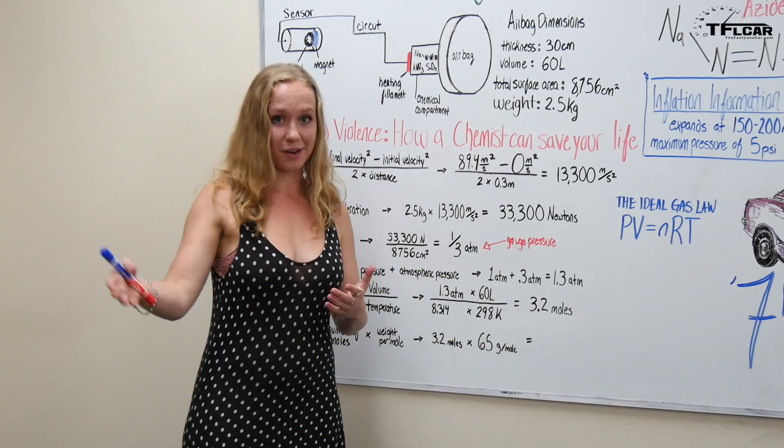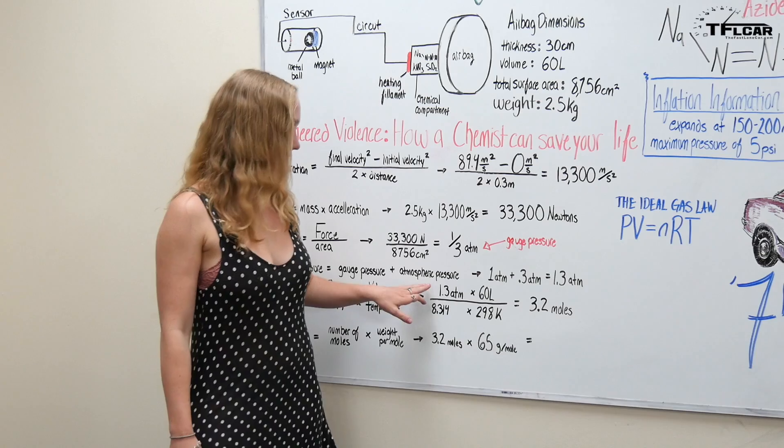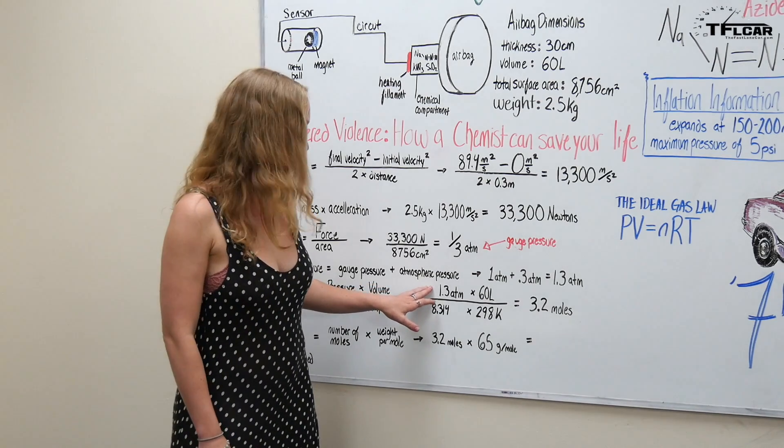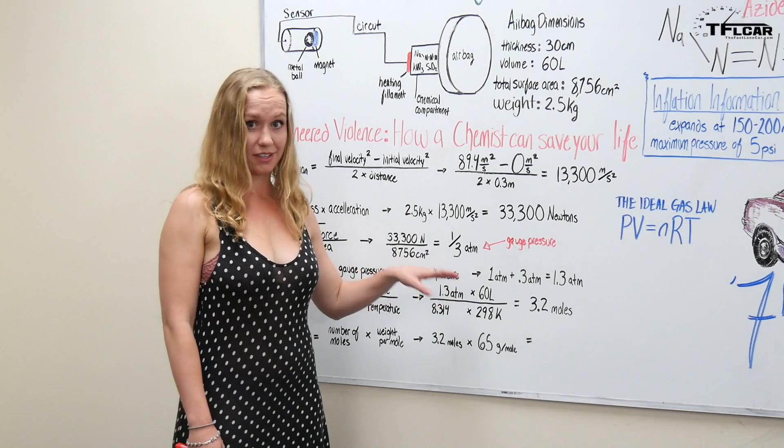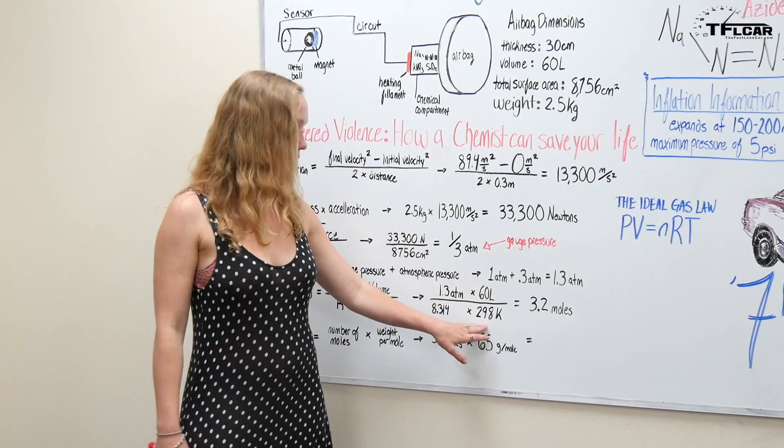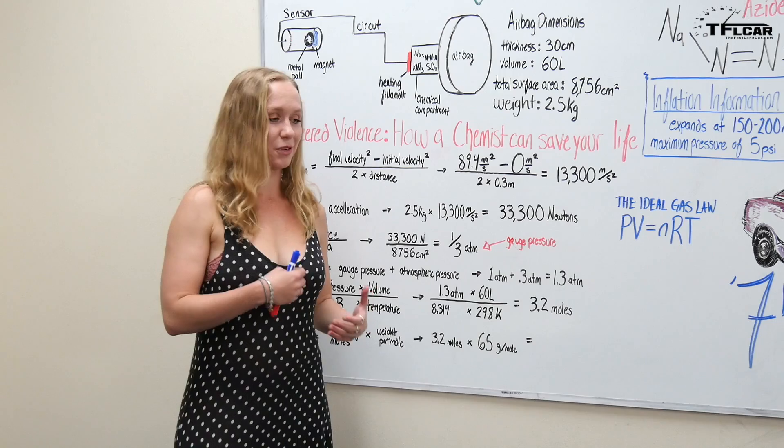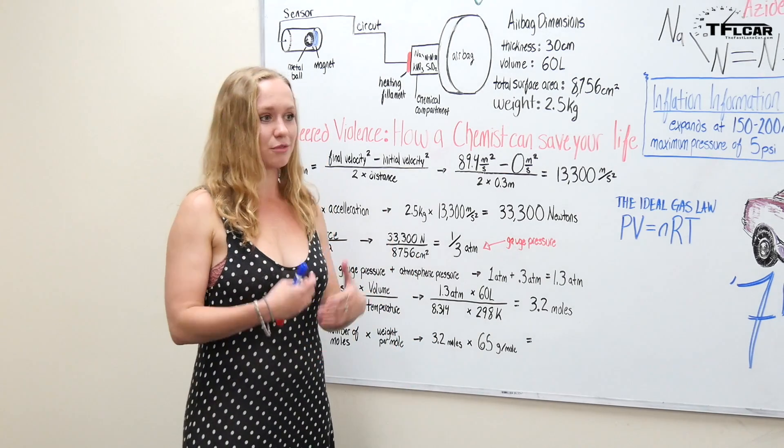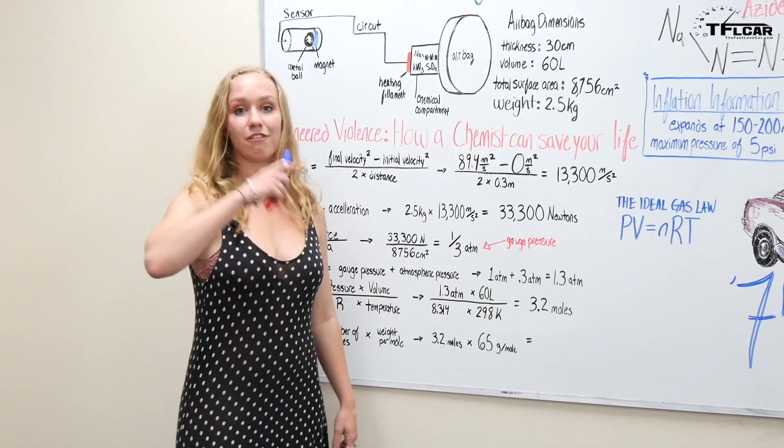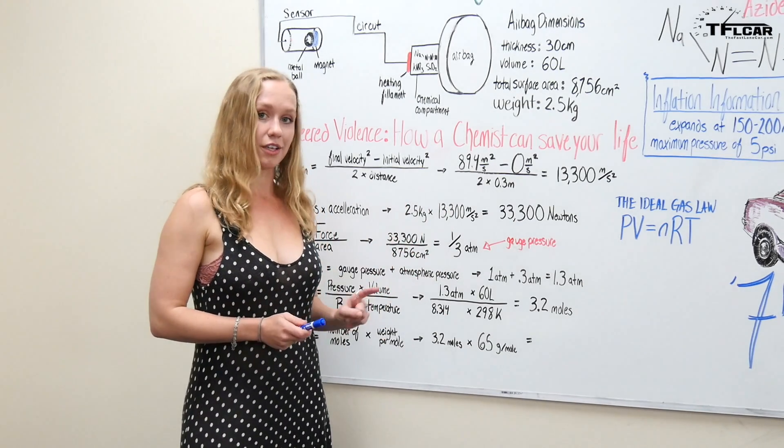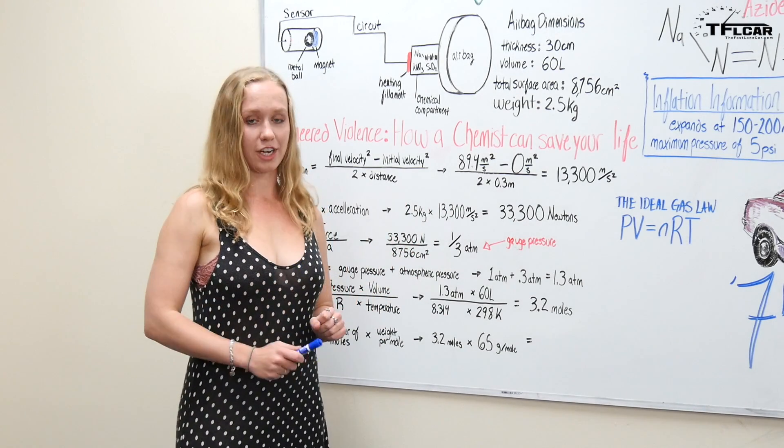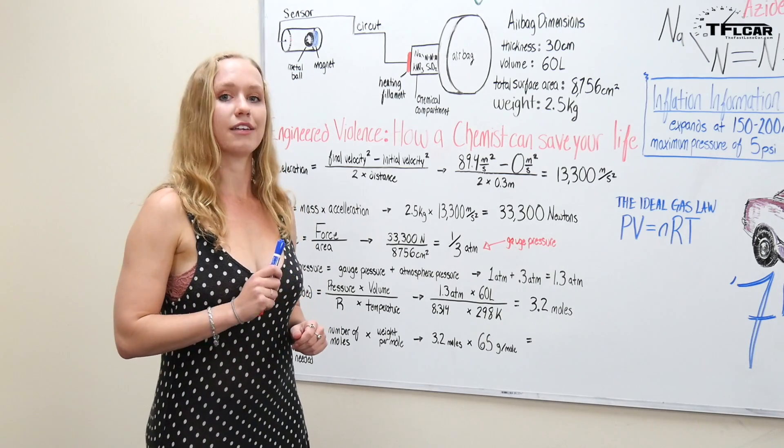So let's review what we know. We know that we need to create a pressure of 1.3 atmospheres. We know that we need to expand this airbag to 60 liters. We also know that the temperature at which this is going to be occurring at is room temperature which when you convert it to the temperature that the ideal gas law needs to be calculated with is 298 Kelvin.